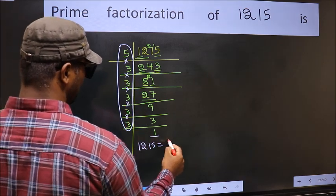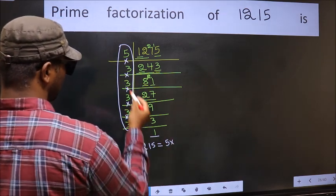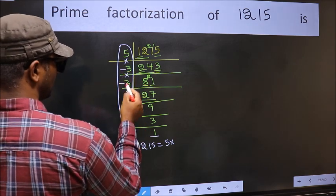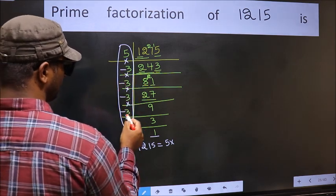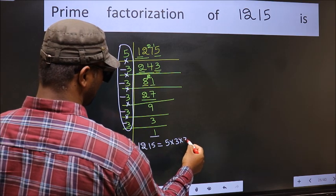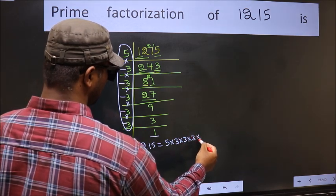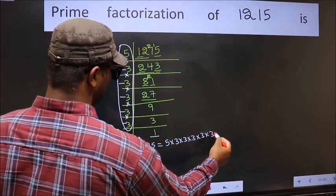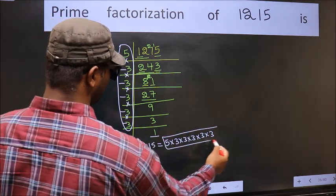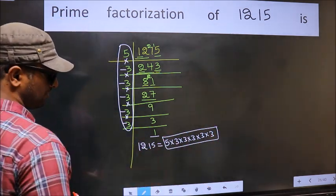So the prime factorization of 1215 is the product of these numbers. That is 5 times — how many times did we get 3? 1, 2, 3, 4, 5. So it is 5 times 3 times 3 times 3 times 3 times 3 times 3. This is the prime factorization of 1215.